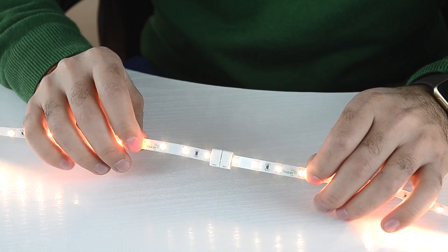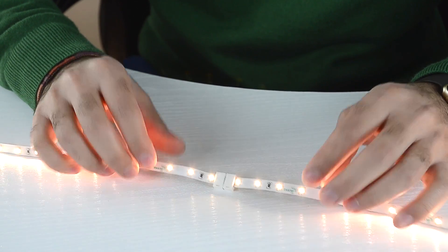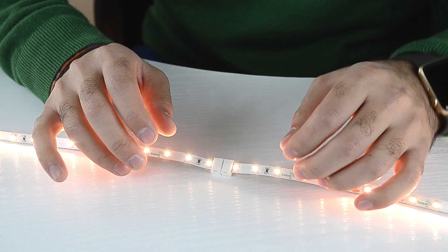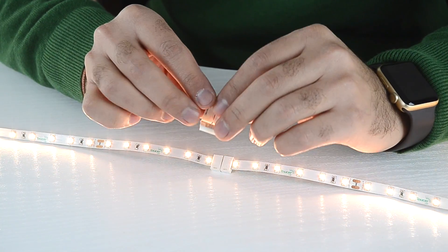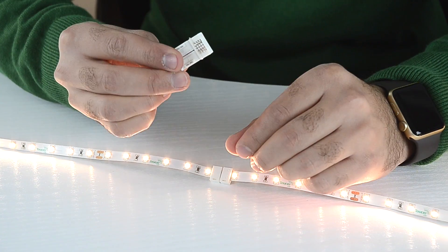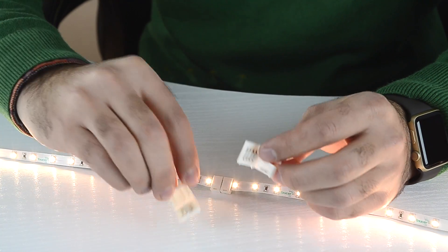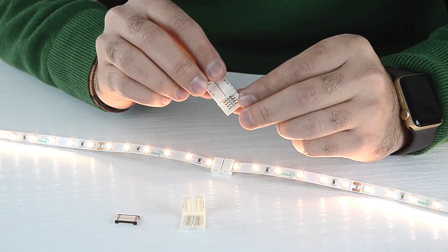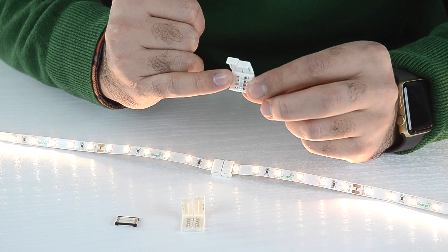The procedure is the same for RGB, RGBW and tunable white strip. Connectors are slightly different for RGB, RGBW and tunable white strip. As you can see there are more silver connecting points, so you have to make sure the copper connection points on the strip are placed correctly.